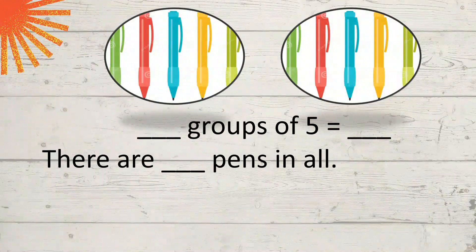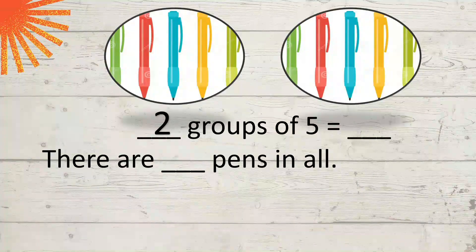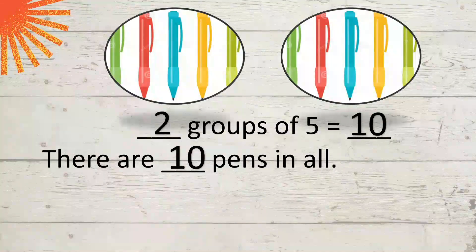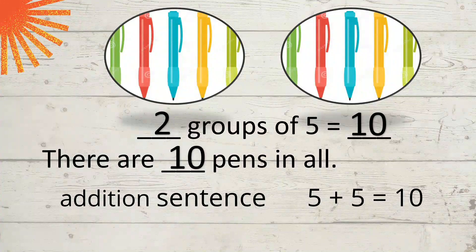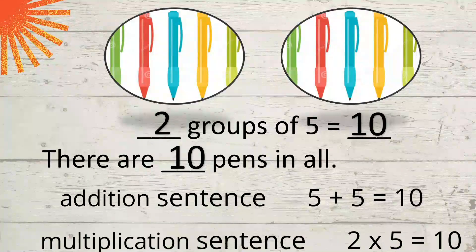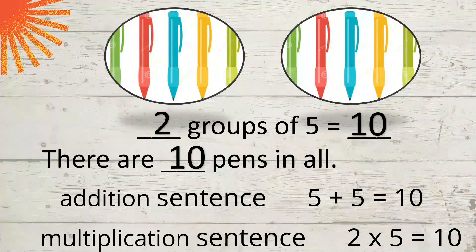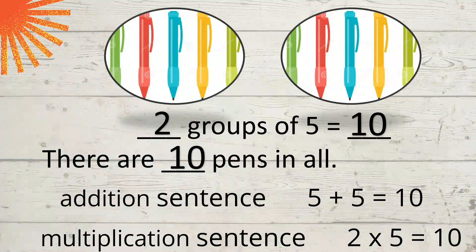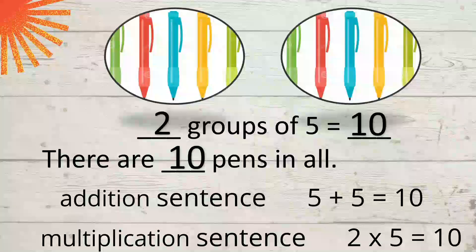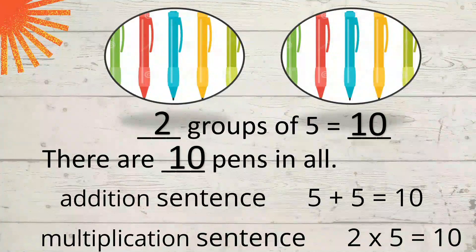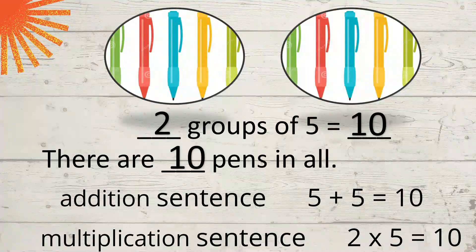Let's have this again. Let's complete these two. Blank groups of 5. How many groups? 2, 2 groups of 5 equals 10. So there are 10 pens in all. And this is the addition sentence, 5 plus 5 equals 10. Multiplication sentence, 2 times 5 equals 10. Again, 2 there is the number of groups and 5 there is the number of objects in each group. And equals 10 because there are 10 pens in all. That's the total. So that's the product. The answer in multiplication. And the numbers that we multiplied, 2 and 5, are what we call factors.